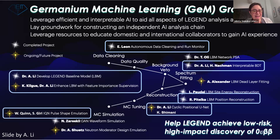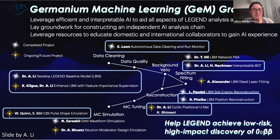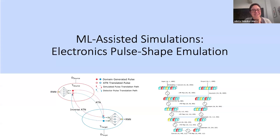Over the last few years, a huge effort on germanium machine learning has blossomed, with projects covering many different aspects of the analysis. The ones I've boxed are ones my group has been involved in. I'm not going to tell you about all of them, but I'll give you a smattering — a smorgasbord of what we're working on. First, we're going to talk about a simulation project: pulse shape modeling using machine learning.